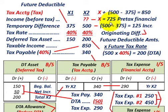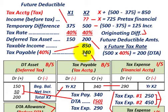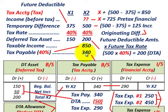The next thing we have to determine is our tax payable — our current tax expense for the year. For year X2, we take our taxable income of $850,000 times our tax rate of 40%, which gives us our tax payable of $340,000.